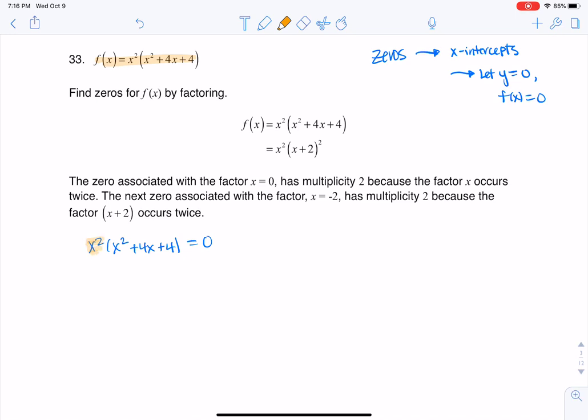Well, they already did the first part of my job—they factored out the x squared. But I have this trinomial here—when I say trinomial I mean the x squared plus 4x plus 4—and I can factor that. So this breaks into x squared times x plus 2 times x plus 2. And if I simplify that a little bit more, I have x squared times x plus 2 squared, and let me write is equal to zero.